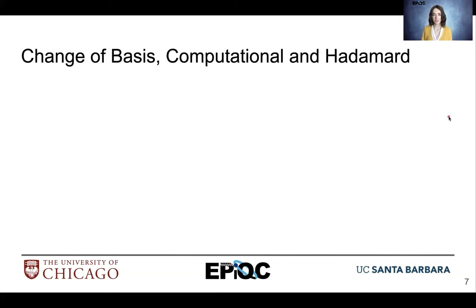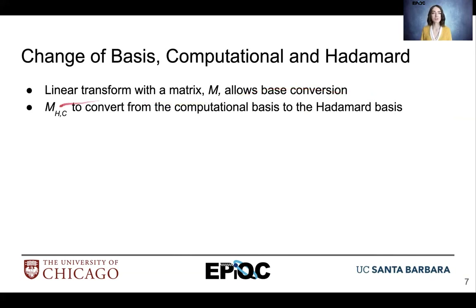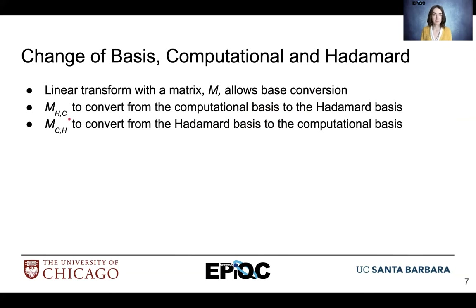Let's discuss change of basis — specifically, going between the computational basis and the Hadamard basis. We have a linear transformation, and don't let the word confuse you: a linear transformation is simply a matrix. The matrix M applies a linear transform that allows a basis conversion. MHC converts from computational basis to Hadamard, while MCH converts from Hadamard to computational basis.